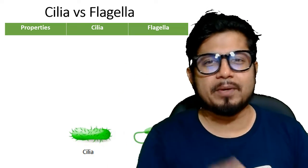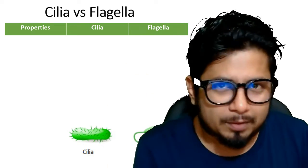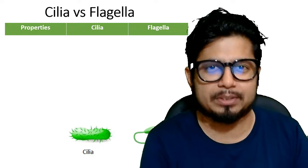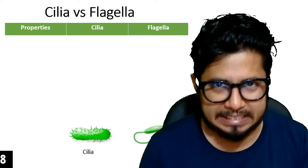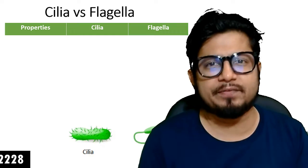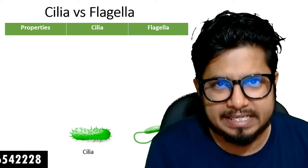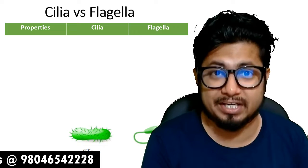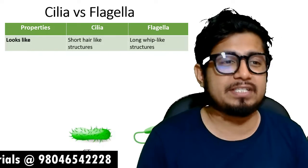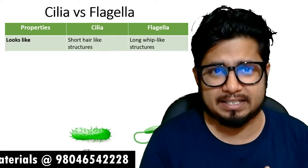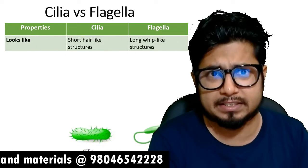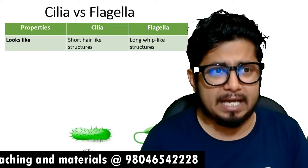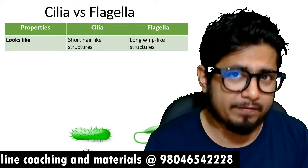Hello everyone, welcome to another video from Shomu's Biology. Here we are going to talk about the difference between cilia and flagella. The first thing is regarding the structure: how cilia and flagella look. Cilia looks like short, hair-like structures.